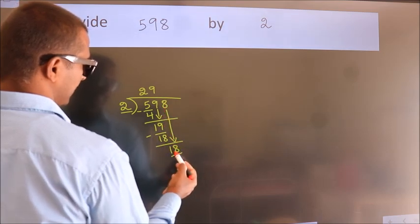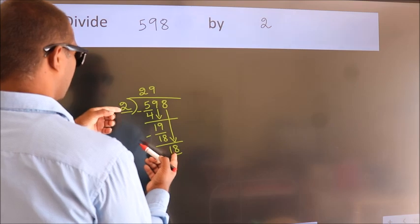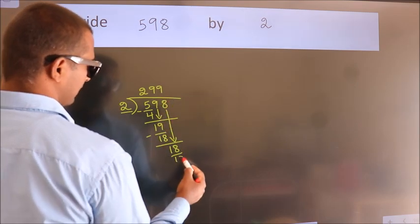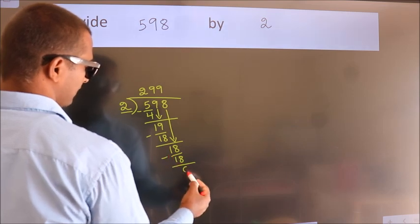So, 18. When do we get 18? In 2 table, 2 9s, 18. Now, we subtract. We get 0.